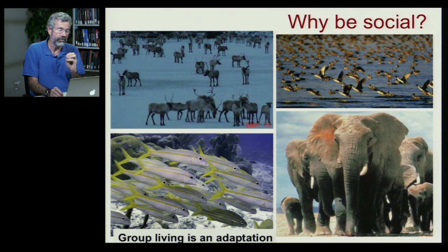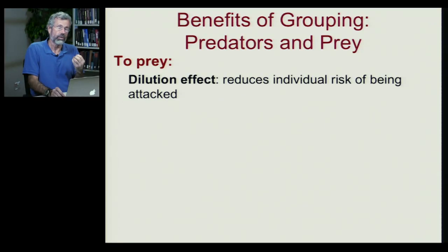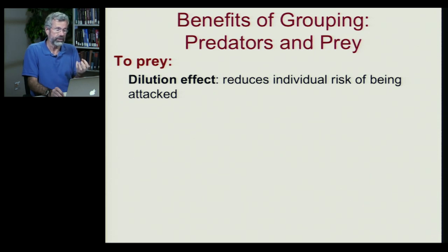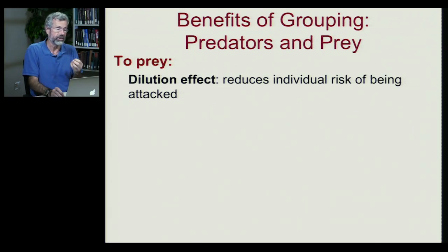There's probably an evolutionary advantage from living in a group. To get used to the idea that living in groups might actually be an adaptation, I want to focus on predators and their prey. There are many different ideas for why prey might want to live in groups to protect themselves against predators. The first is called the dilution effect, where an individual is less likely to be chosen by a predator if it's in a group.